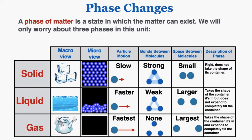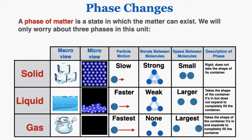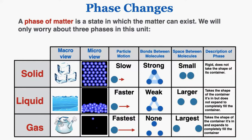Notice that in the micro view for the three phases, the particles are being held together in different ways. In the solid they're held together very strongly; in the liquid they're still relatively close to each other, still holding each other together in some way; and in the gas they're free-floating and not holding each other together at all. You may also notice that kinetic energy increases as we go from solid to liquid to gas — they're moving more and more, and the bonds between the molecules are becoming weaker.